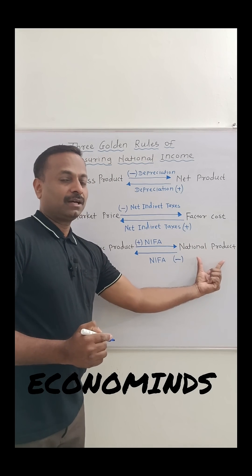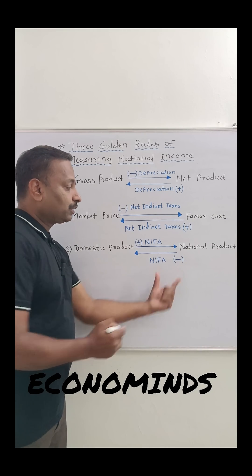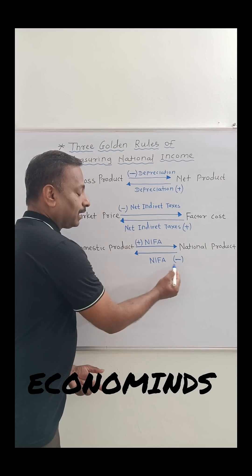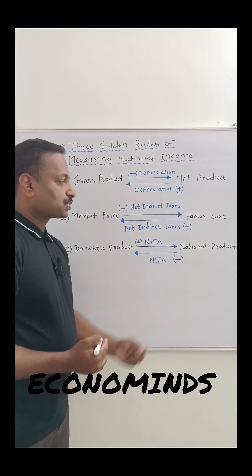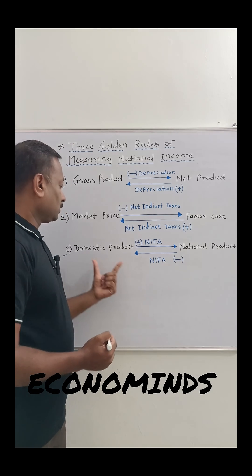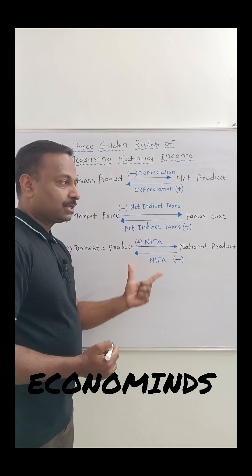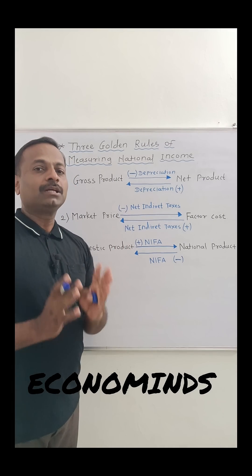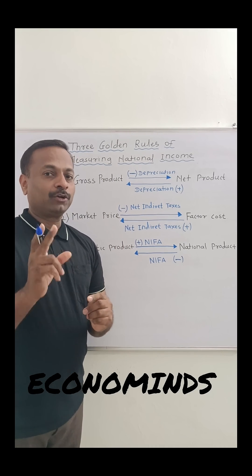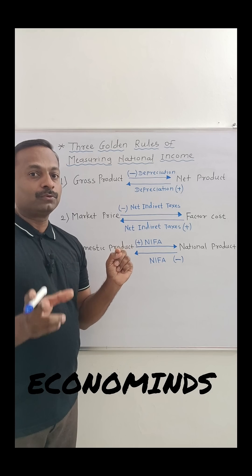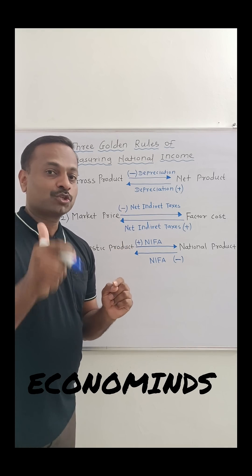When national product is given and we are going to calculate domestic product, we deduct NFIA from national income. So: national income equals domestic product plus NFIA. These are the fundamental rules of measuring national income. I hope this will be very helpful when you calculate national income. Thank you so much.